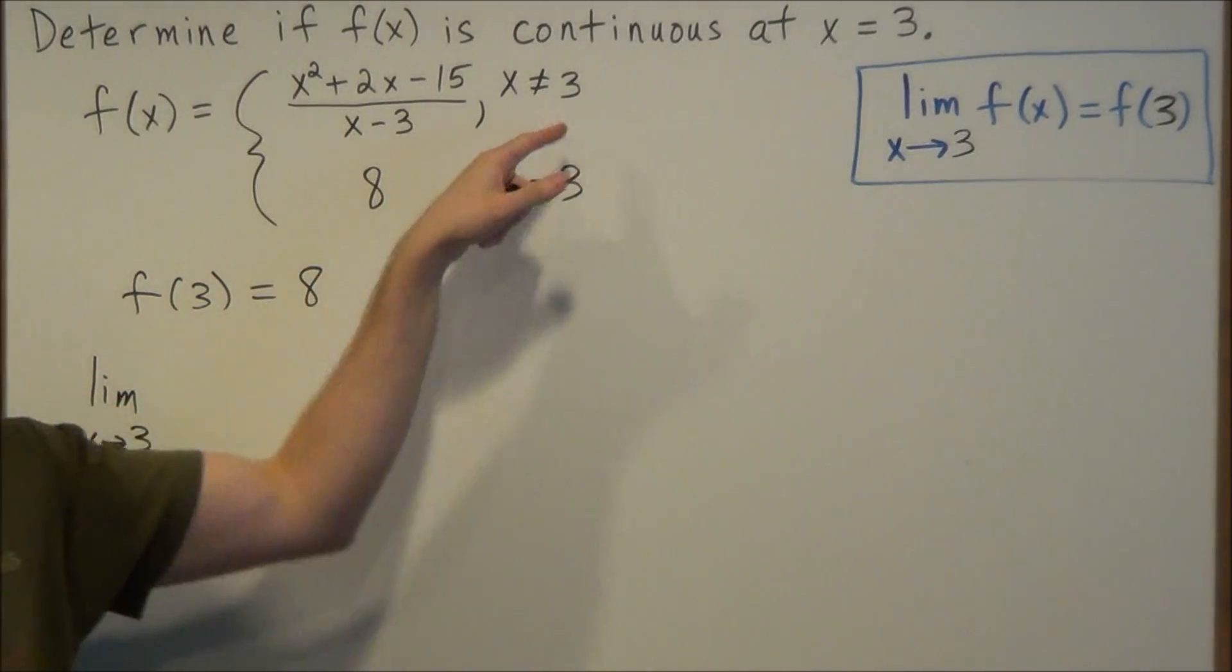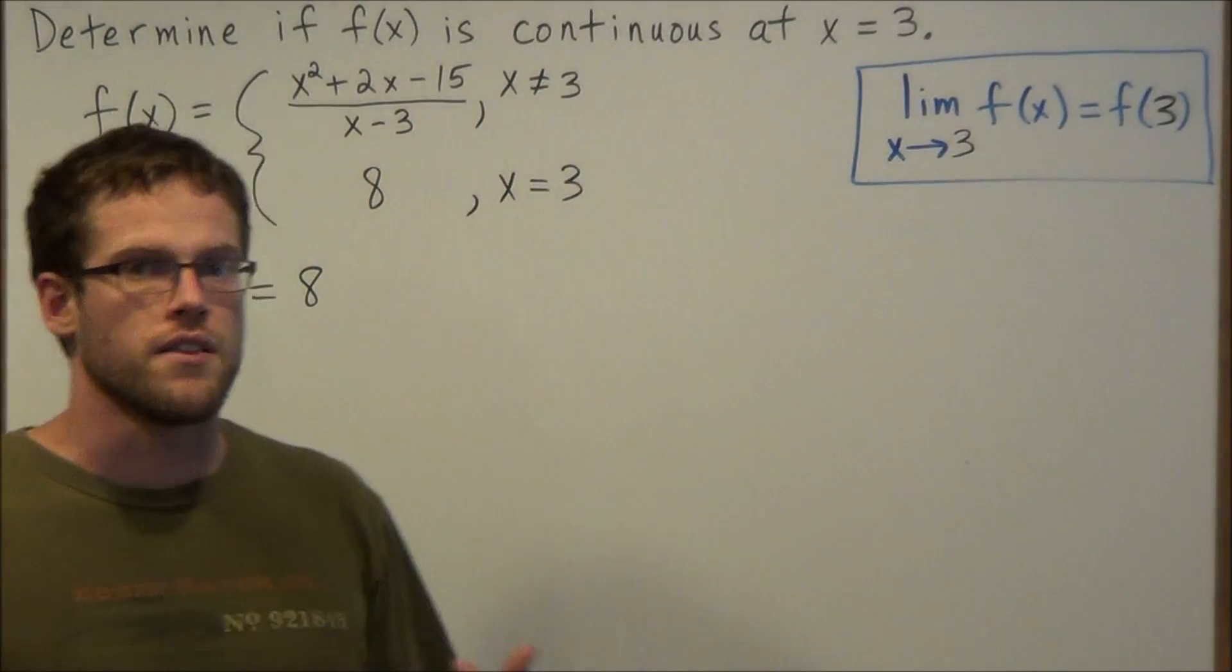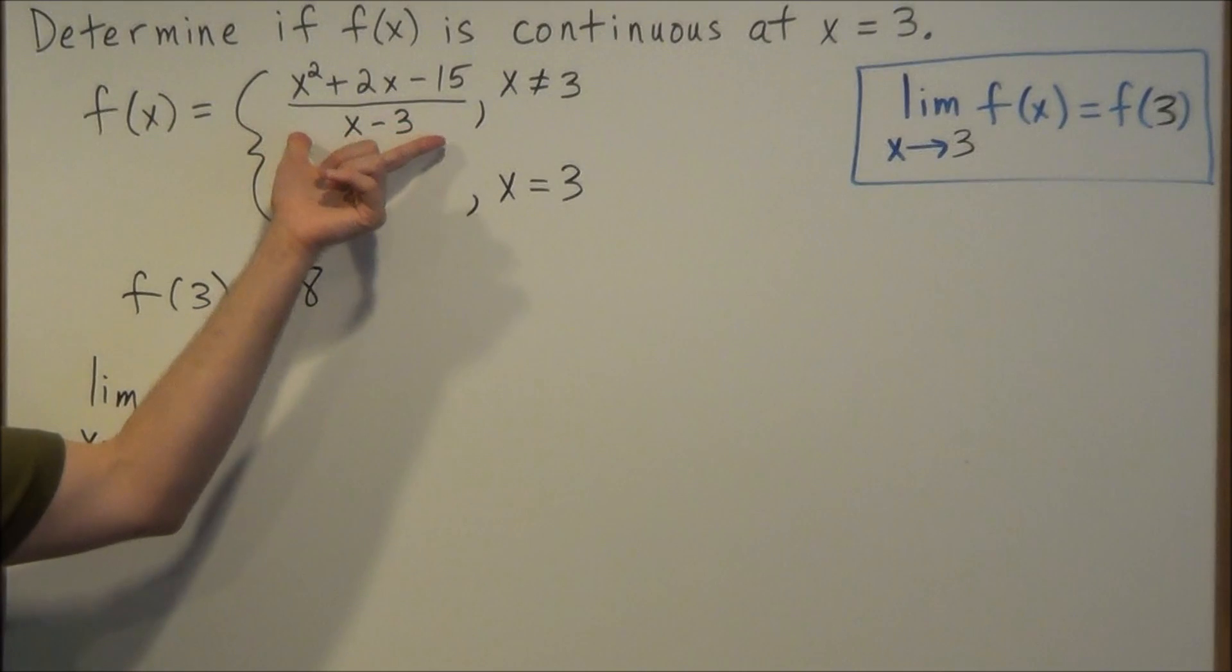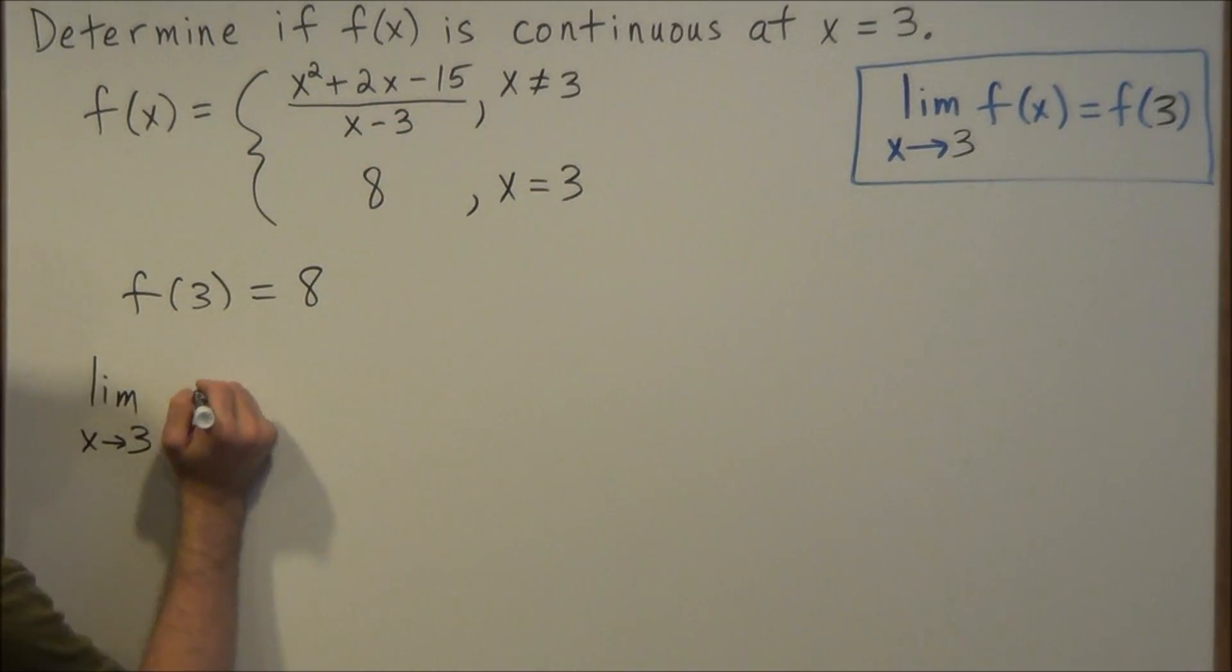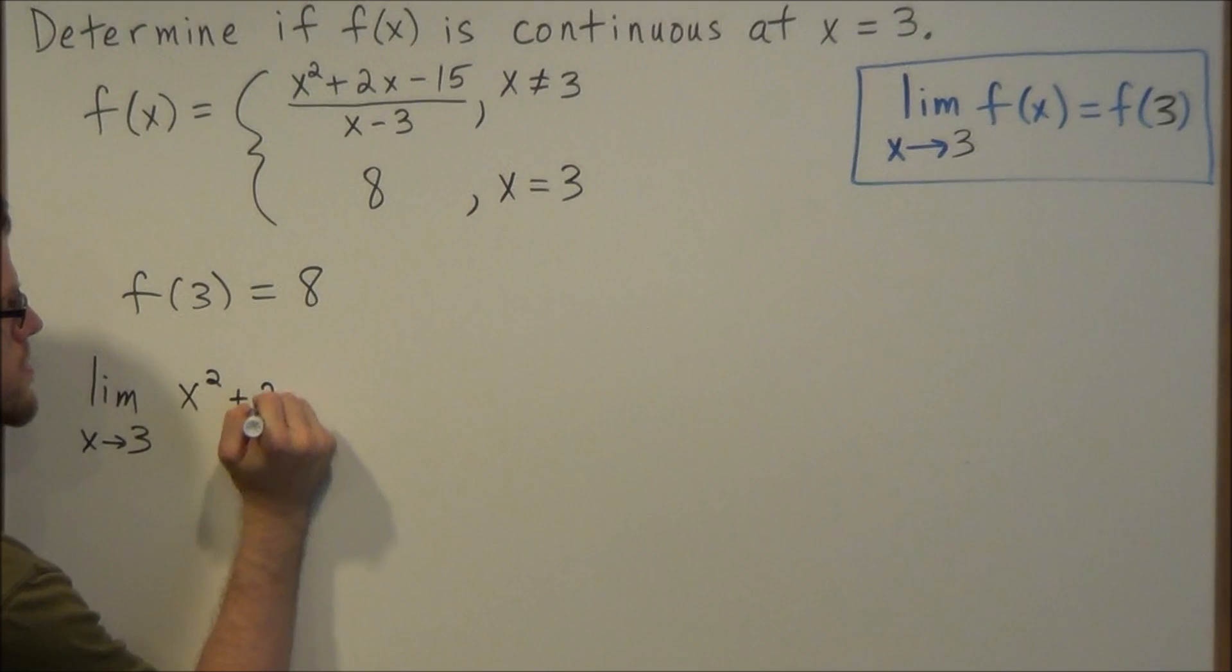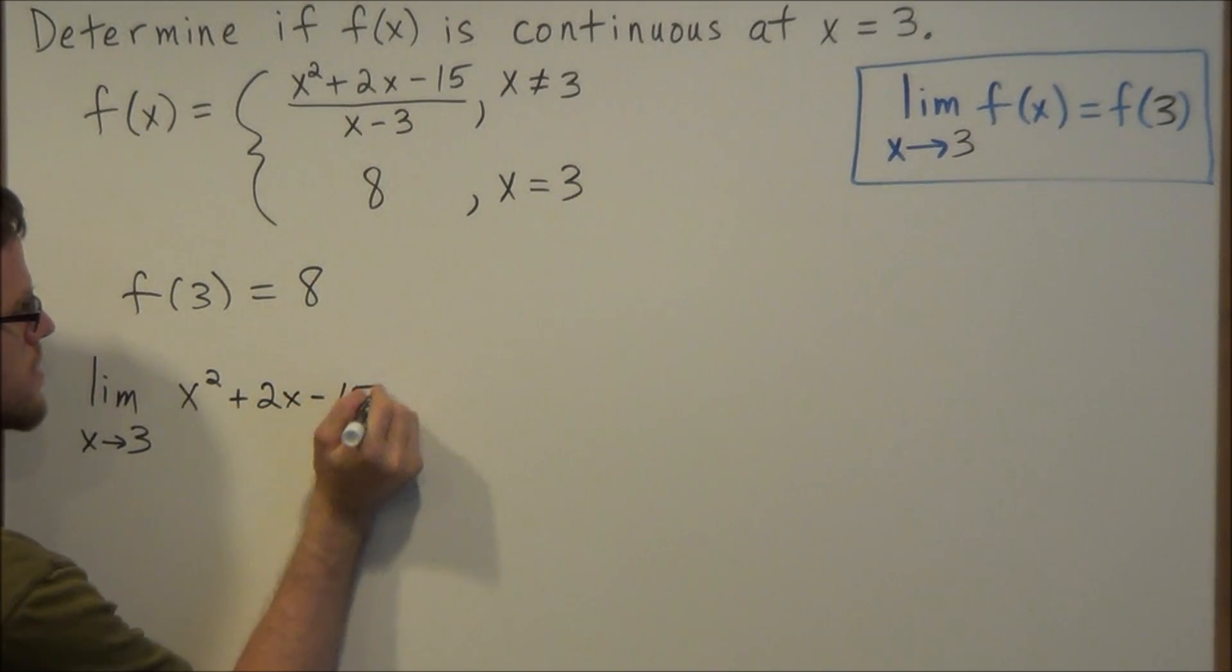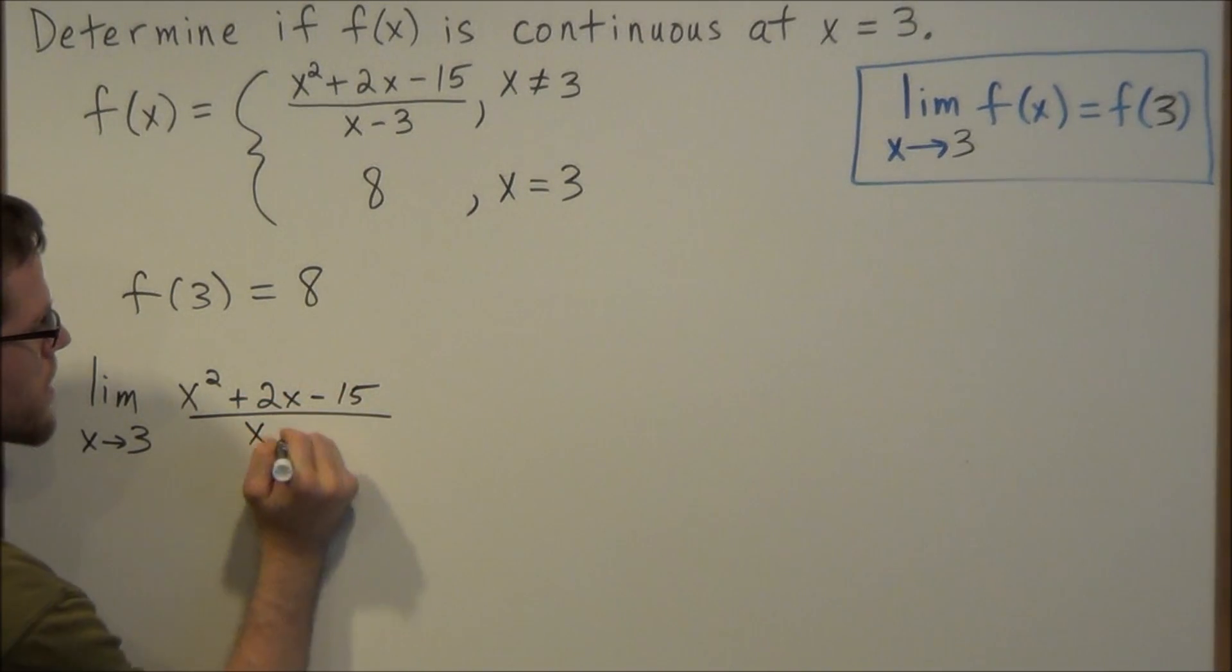that refers to when x is not equal to 3. We could approach from the left and the right side. So we're going to find the limit of this top portion here: x squared plus 2x minus 15 over x minus 3.